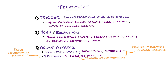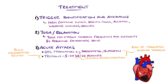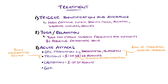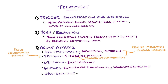Additionally, triptans trigger vasoconstriction through the 1b receptor, and as such are avoided in those with uncontrolled hypertension or those with coronary artery disease. Lasmitidan is a new selective serotonin 1f receptor agonist, which is also an option and due to its selective nature, does not have cardiovascular contraindications. Gepants, which are small molecule calcitonin gene-related peptide receptor antagonists, are used; examples include ubrogepant and rimegepant. Dihydroergotamine is an ergot derivative and another option usually used after failure of the above-mentioned agents. If nausea or vomiting are prominent, antiemetics such as metoclopramide or promethazine can be used.